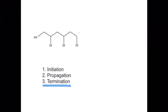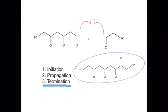Now we are on to the final stage of termination. Because termination is the final step, you want to terminate the chain and no longer have a radical. You add another radical onto your pre-existing radical chain to form your final polymer. Your two radicals come together and form a bond, and this is our final structure.